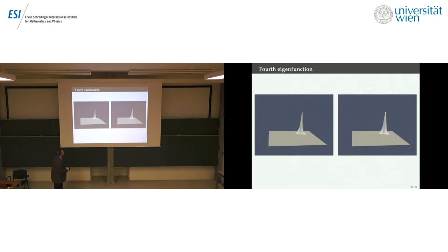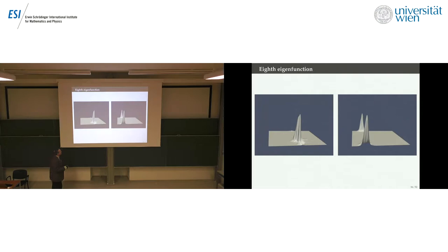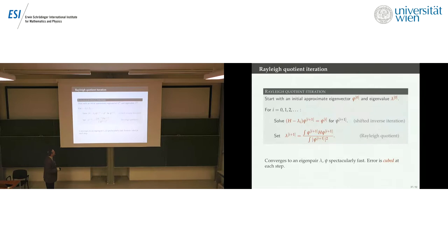For eigenfunctions that change sign, we're still working on how to get control of that — the higher you go in energy, the more sign changes there are. The eighth eigenfunction gave us the wrong one — if you want to know what we got, go not to the ninth but to the tenth. The order is different when local minima are in near ties. This shouldn't be regarded as a big mistake — we get both eigenfunctions, slightly out of order, but that's the sort of issue to deal with.